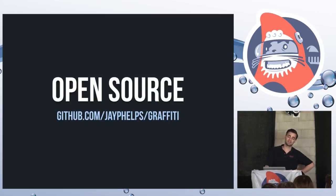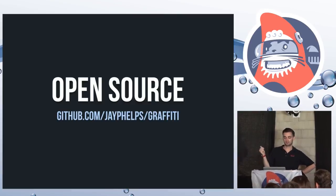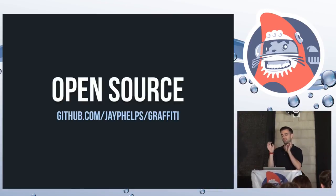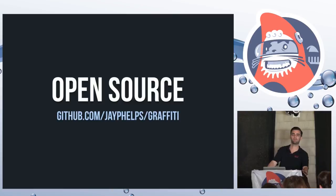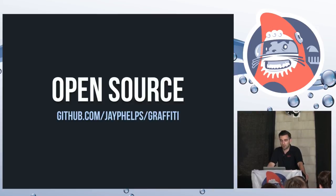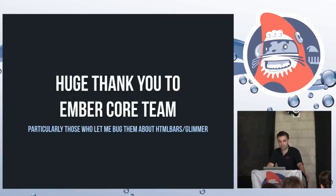Yes, it is open source. As of this morning I pushed it — push it real good. It's at github.com/jphelps/graffiti. Now that it's out, I'm going to be continuing to update it. Please don't feel shy about saying this doesn't work or this is bad — it is super alpha, so don't use it in production. Netflix is going to possibly invest heavily in this technology. It's in the R&D phase and we're trying to get our feet wet. Your input is definitely desirable — contributions are very much welcome. I want to give a quick shout out to the Ember core team, particularly those who let me bug them about HTML bars and Glimmer — especially Matthew Beal, Mixonic.